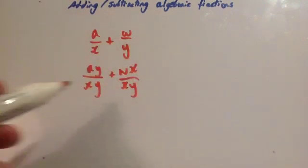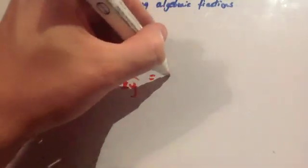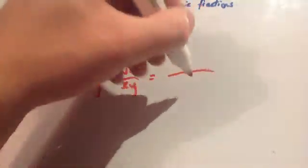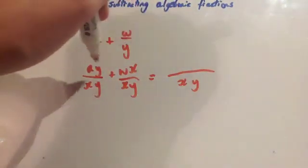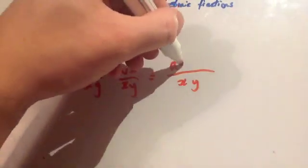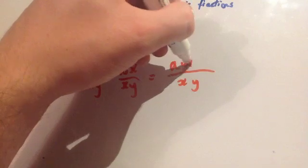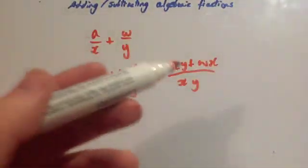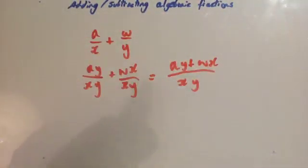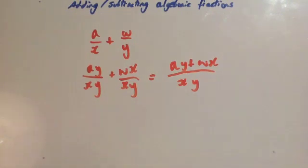As you can see, the two denominators are now the same, so we can then just write the denominator as xy. And then the two top expressions, you just add them together: ay plus wx. That can't be factorized or simplified, so that's your answer — ay plus wx over xy.